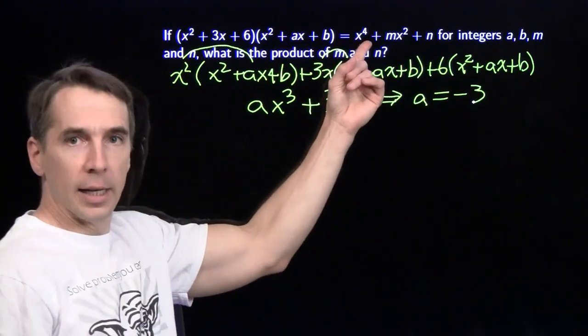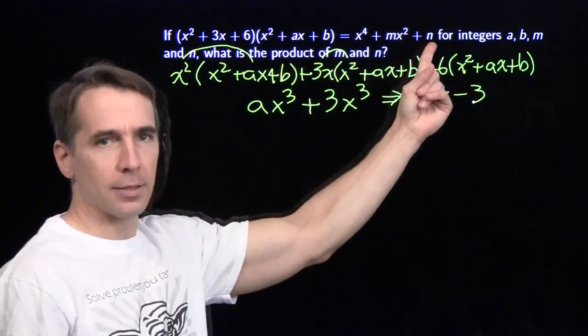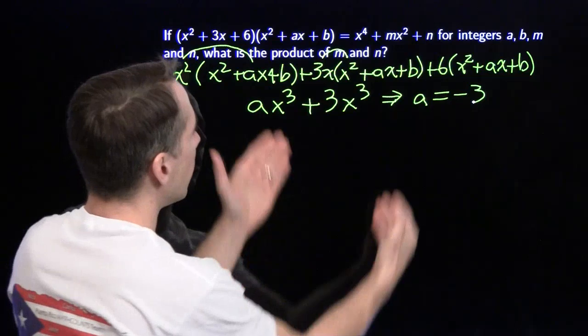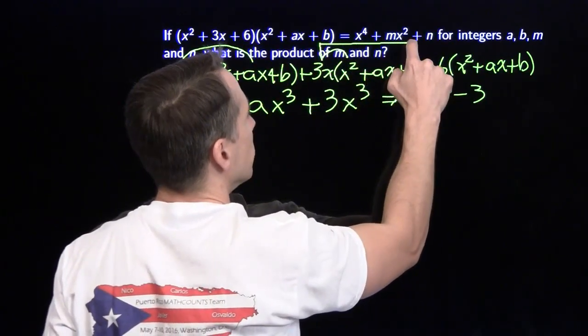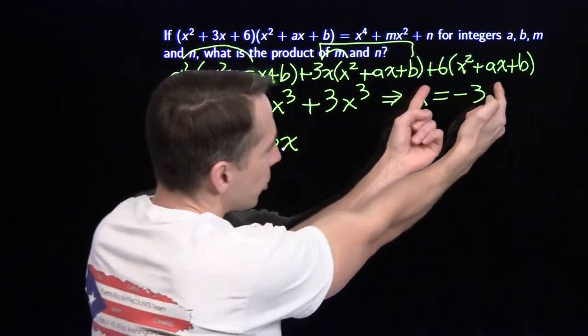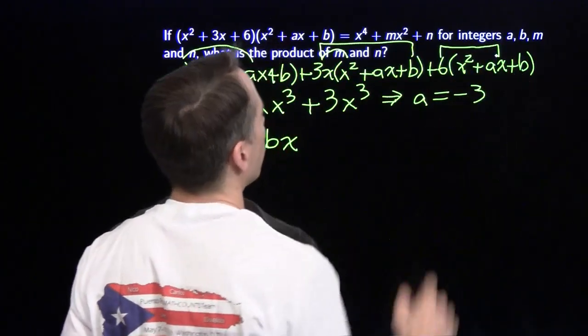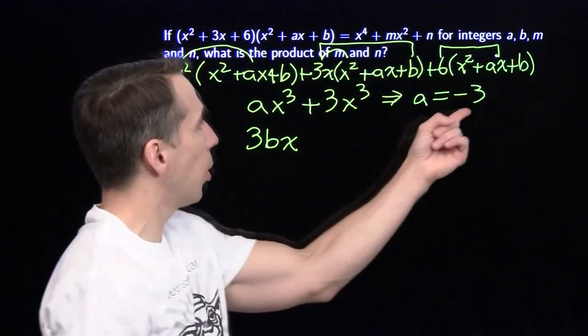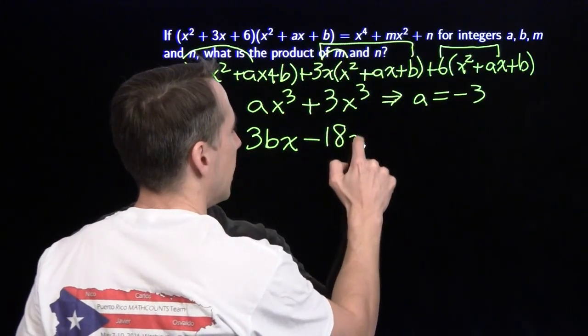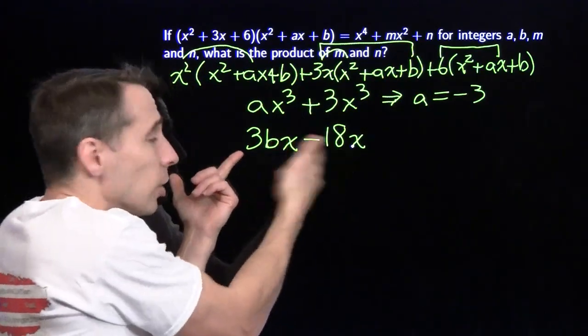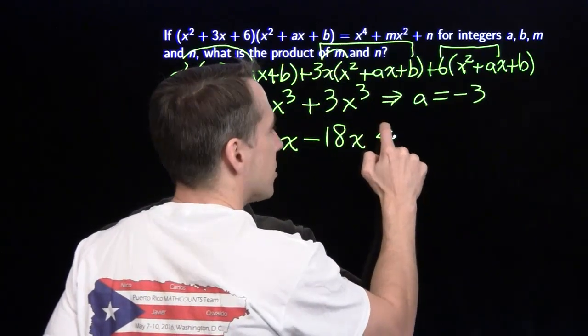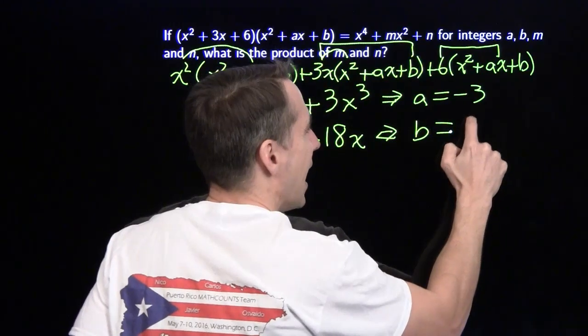Alright, we got somewhere by looking at x³. Let's look at the other thing that's not there, the x. Now where are we going to get an x over here? Well, we're not going to get an x at all right here. Over here, we're going to get an x multiplying these two terms. That's going to give us 3bx. And we're going to get an x multiplying these two terms right here. That's going to give us a 6ax. We already know that a is negative 3. 6 times negative 3 gives us a minus 18x. Alright, now we need this term to go away. Just like we needed this term to go away. So that tells us that b is 6. That'll knock out the x term.